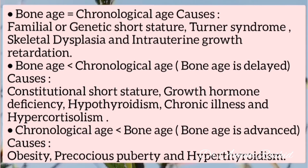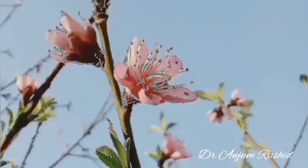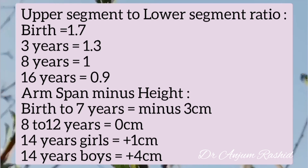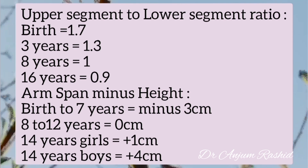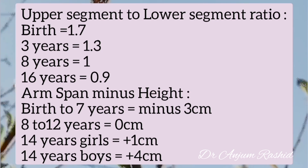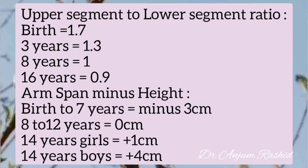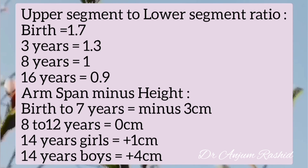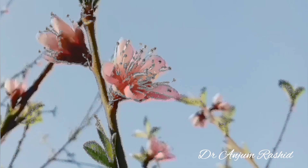Upper segment to lower segment ratio: at birth 1.7, at 3 years 1.3, at 8 years 1.0, and at 16 years 0.9. Arm span minus height: birth to 7 years −3 cm, 8 to 12 years 0 cm, at 14 years girls +1 cm, and at 14 years boys +4 cm.